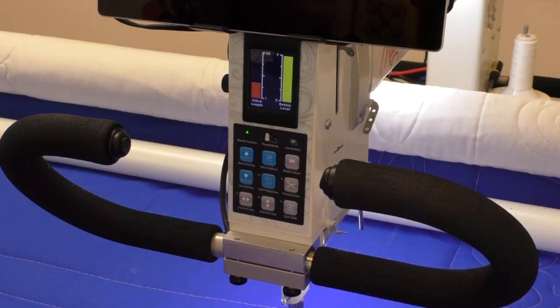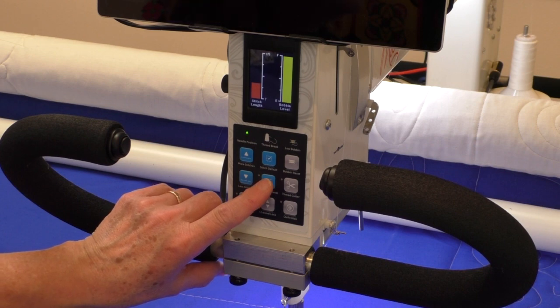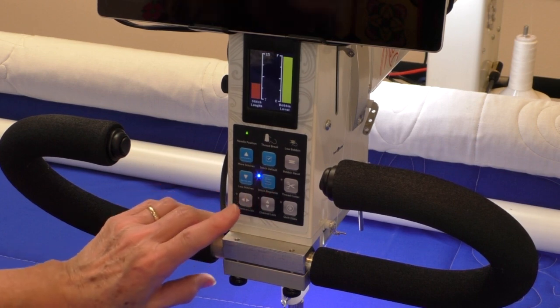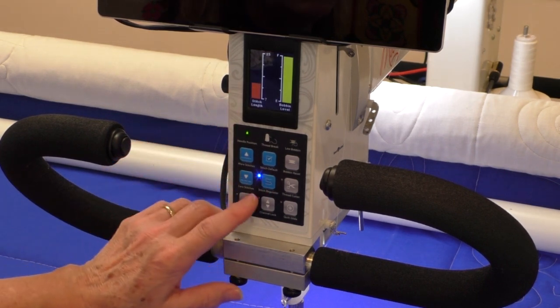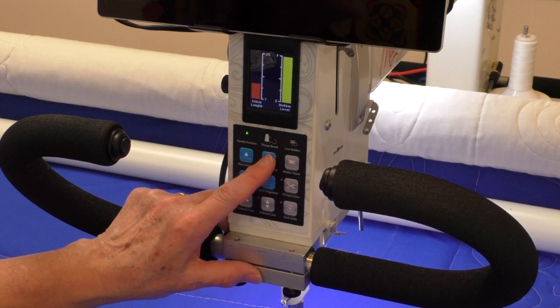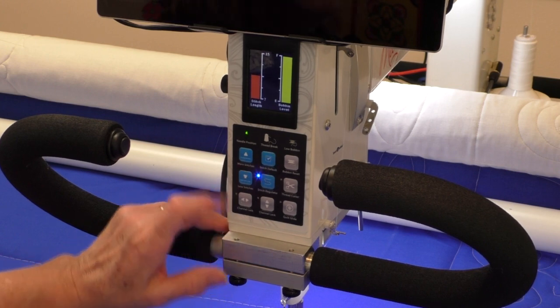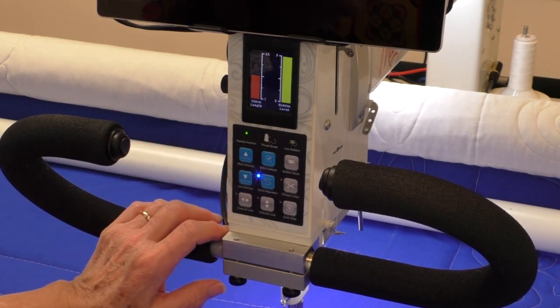When you're finished with your basting project, remember to put your stitch regulator back on and adjust the stitch length to your favorite. I like to just use the APQS stitch default to quickly get me right up to my 11 stitches per inch.